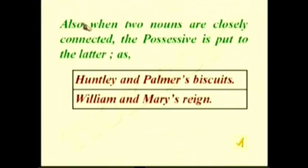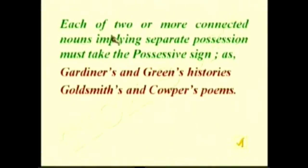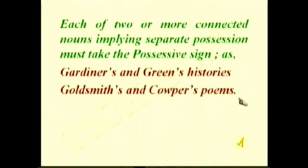When two nouns are closely connected, the possessive is put to the last word only: 'Huntley and Palmer's biscuits,' 'William and Mary's reign.' However, each of two or more connected nouns implying separate possession must take the possessive sign — for example, 'Godwin's and Green's histories,' 'Goldsmith's and Cowper's poems,' meaning Goldsmith's poems as well as Cowper's poems.